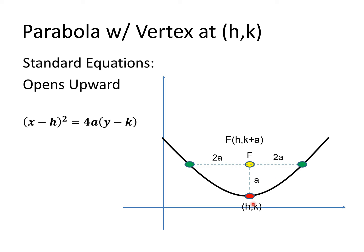Since our vertex is (h,k) and we move from vertex to focus vertically upward with a distance of a, the y-coordinate (k) of the vertex changes — because we move upward, we add a. So the focus has coordinates (h, k + a). The h does not change because we are not moving horizontally, only vertically. So the focus is equal to (h, k + a).